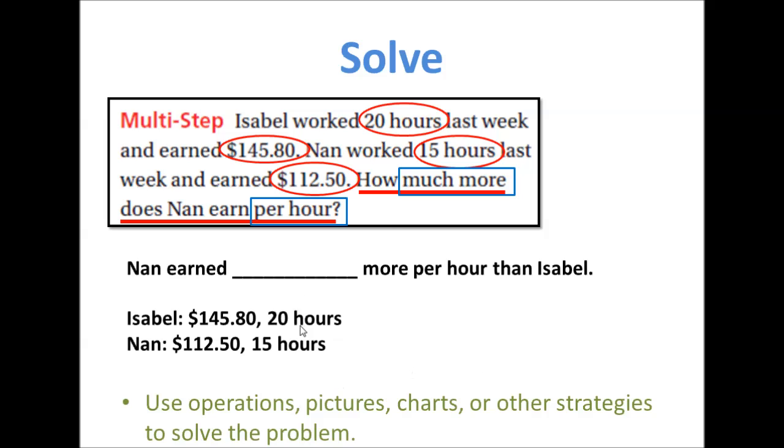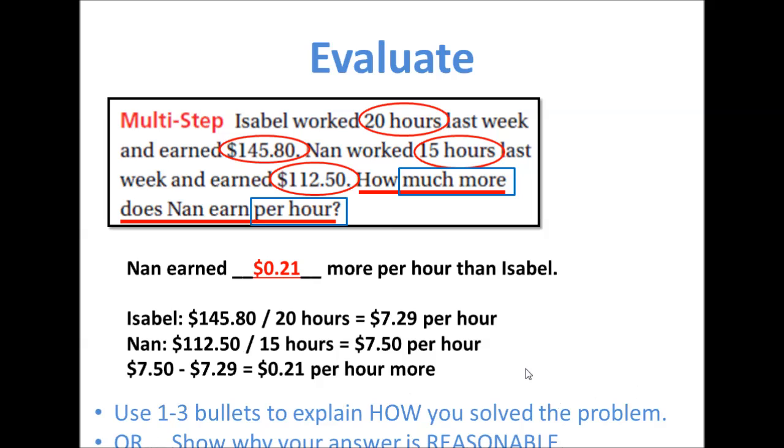So now we go to the solve part. We take this information, we know what we're looking for, we know what information we have and we solve the problem. So here is the work right here. Isabel makes this amount of money in this many hours. We divide that and we get $7.29 an hour. Nan, we calculate her hourly pay. She makes $7.50 per hour. The question is how much more does Nan earn per hour? So we have their hourly amounts. Now we subtract them and we find that Nan makes 21 cents per hour more.